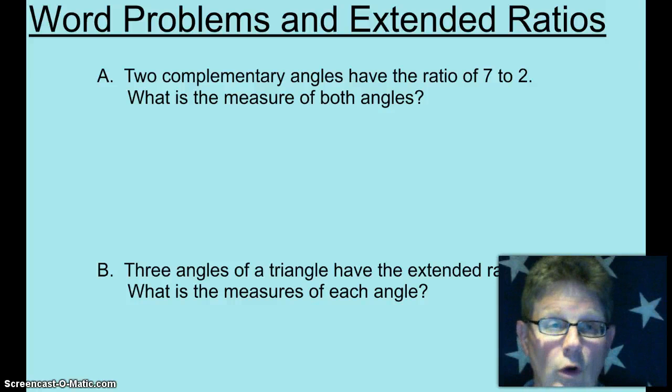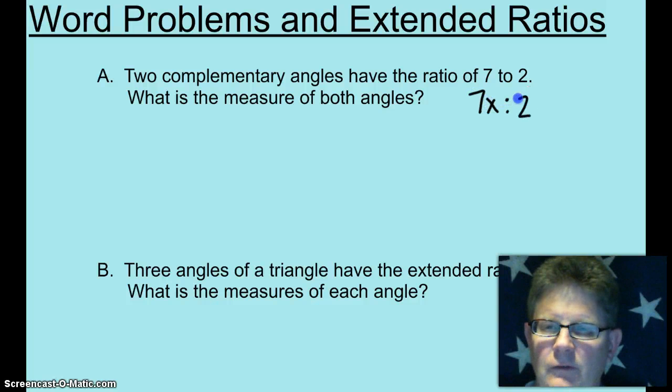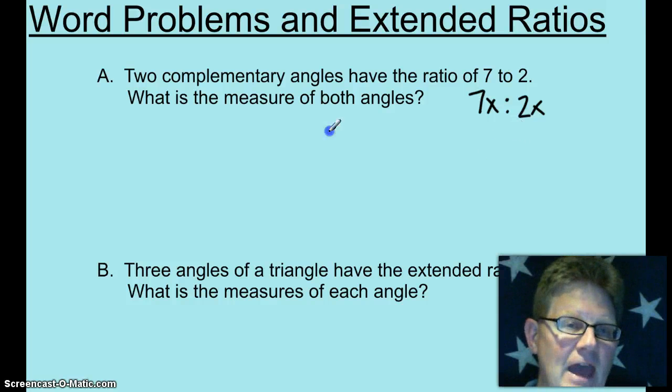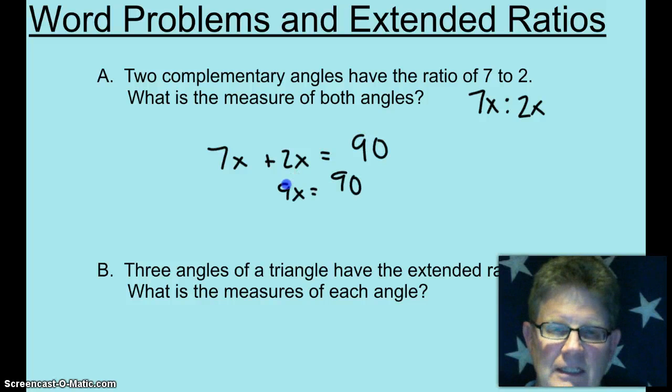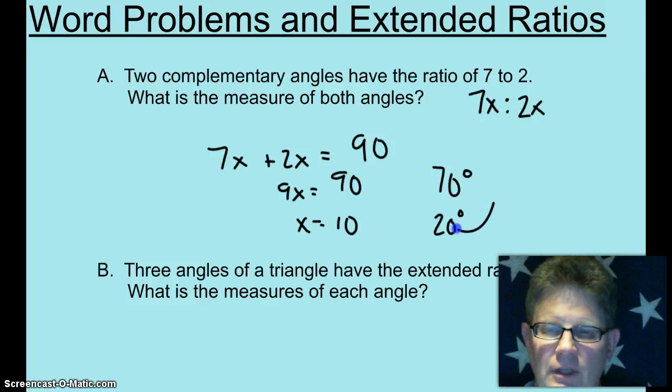Word problems with extended ratios. When you see a ratio of like 7 to 2, I want your brain to think 7x to 2x. And that will get you on the road to 7x plus 2x equals complementary 90. 9x equals 90, x equals 10. Both angles, 70 degrees and 20 degrees, are the measures of the two angles.